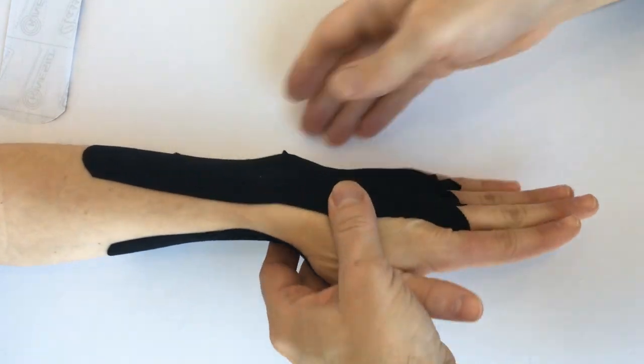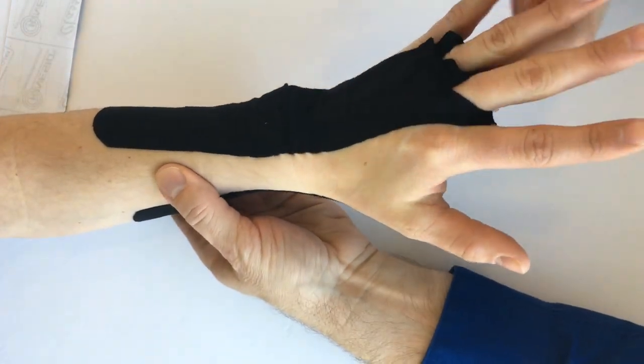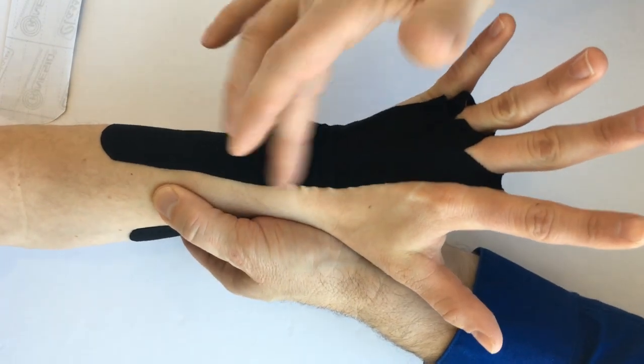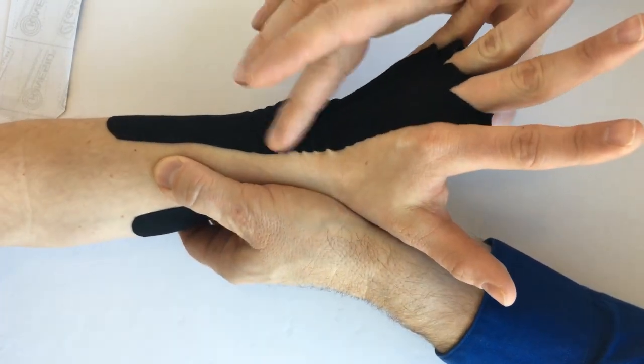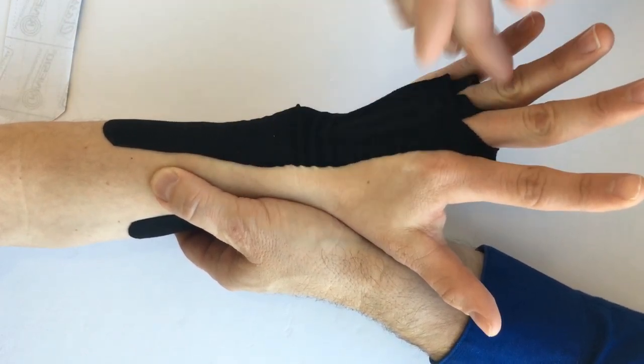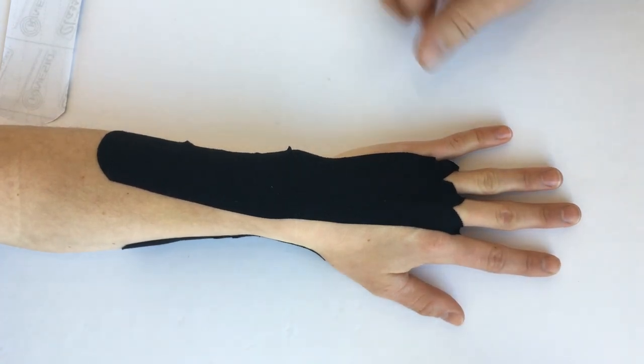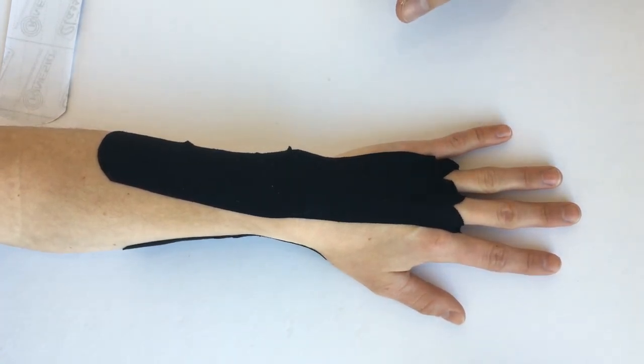One of the things you'll notice is that when the client moves their fingers or wrist, you'll get all these wrinkles in the kinesio tape, and all those wrinkles will pull on those anchoring filaments and stimulate those initial lymphatics to pull the edema out of the hand and wrist.